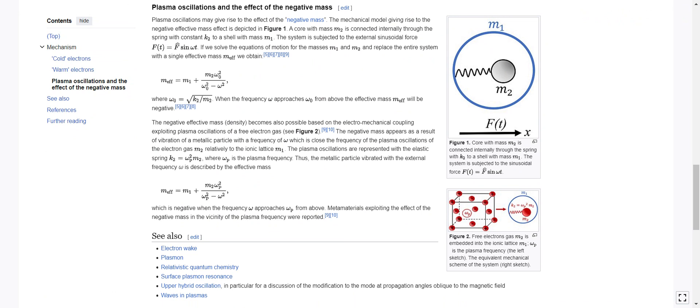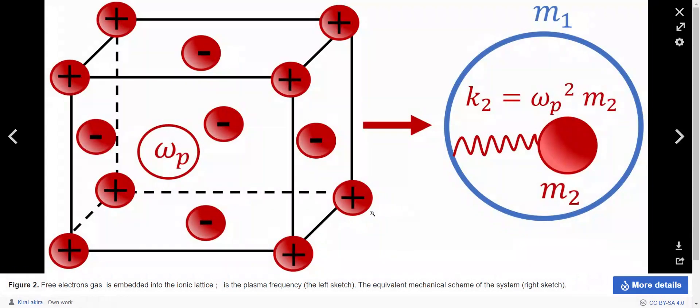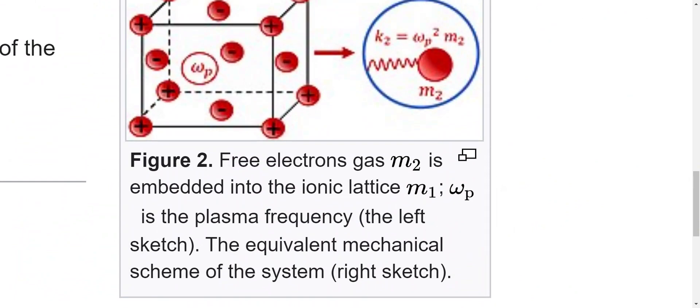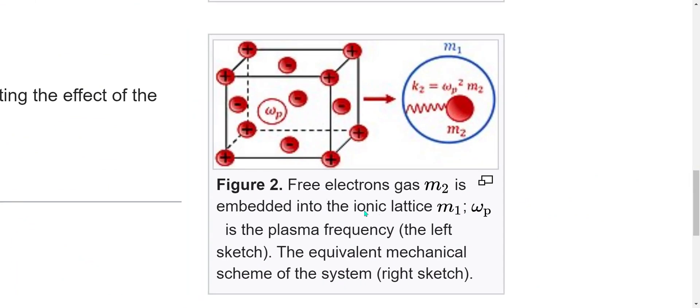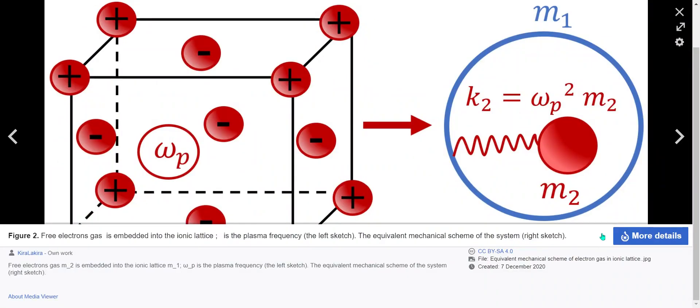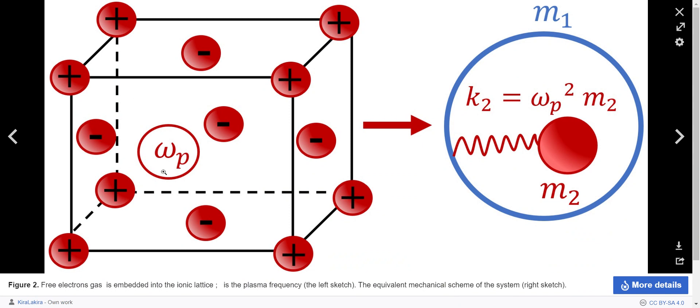Free electrons gas M2 is embedded into the ionic lattice M1, and omega P is the plasma frequency, the left sketch. The equivalent mechanical scheme of the system, right sketch.